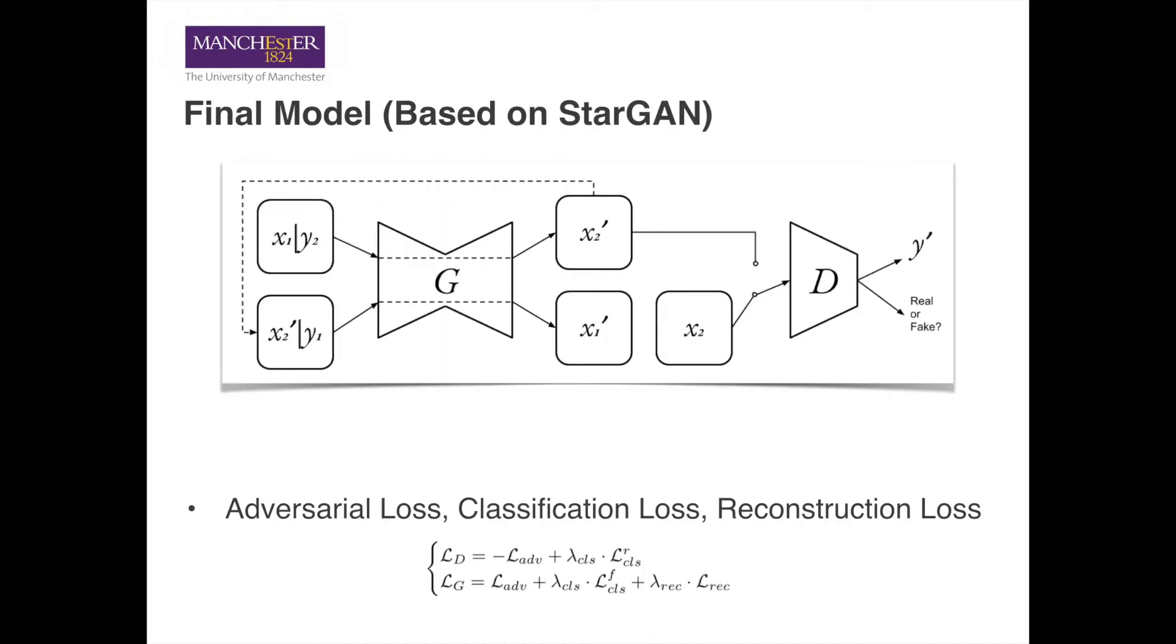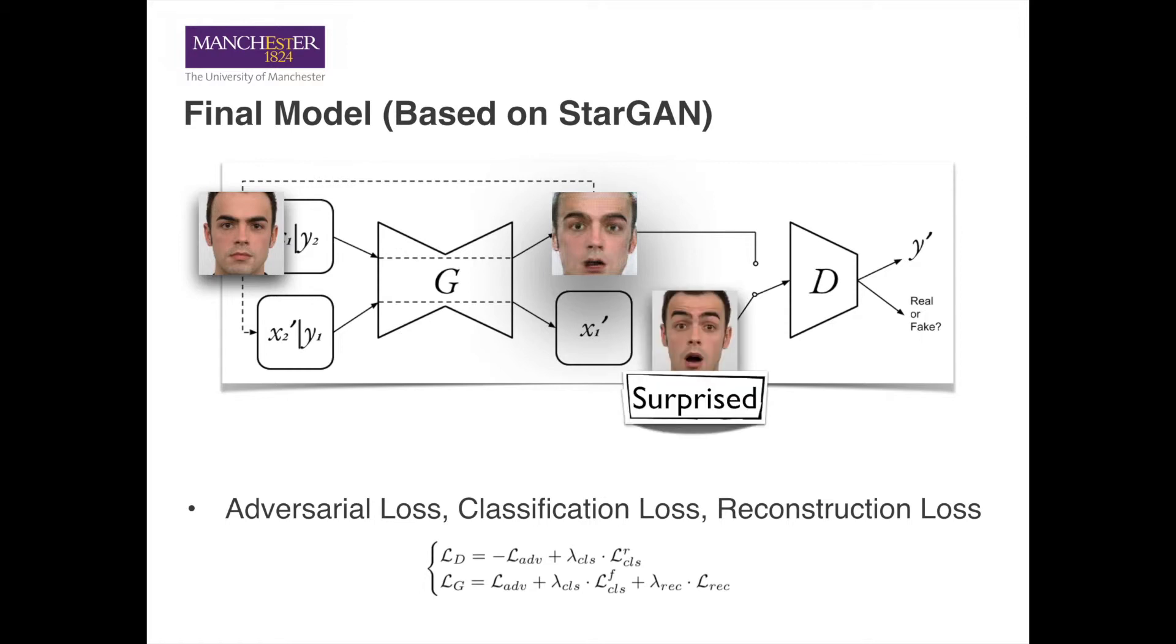The structure of the final model is shown on this slide. The generator takes the concatenation of a condition and an image as the input, then outputs the generated image of the condition. Together with the real image of the same expression, both images are put into the discriminator.